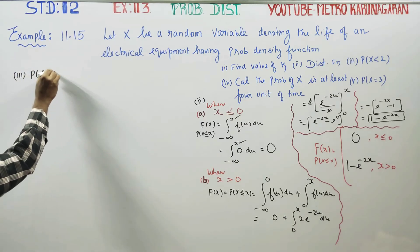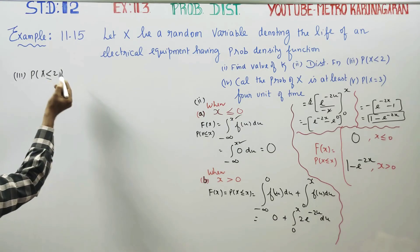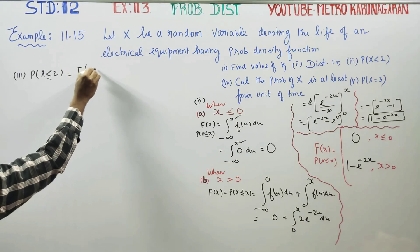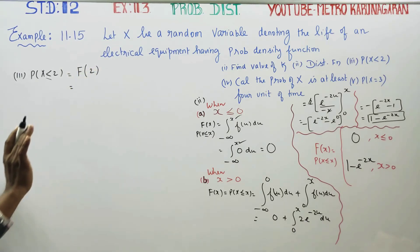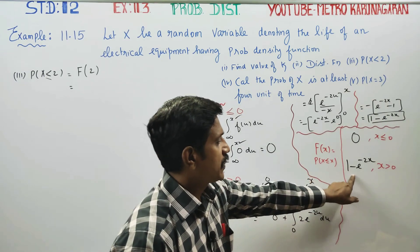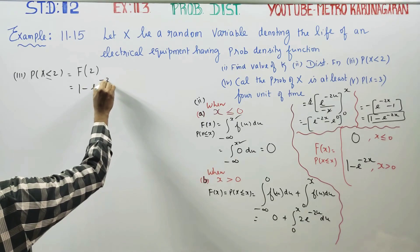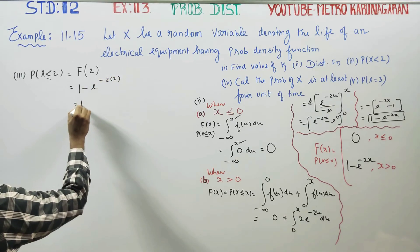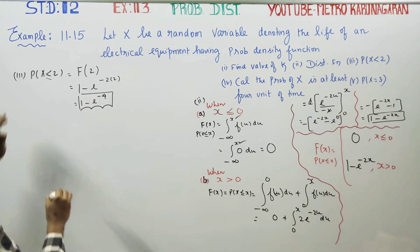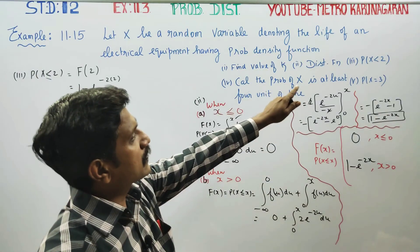Third subdivision: find the probability of X less than 2. This equals F(2) directly using the distribution function. Since 2 is greater than 0, we use the formula 1 minus e to the power minus 2 times 2, which gives 1 minus e to the power minus 4. That is the answer.